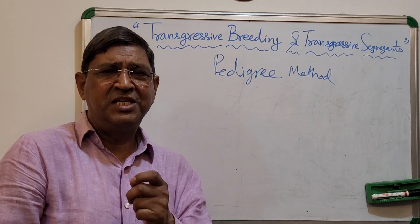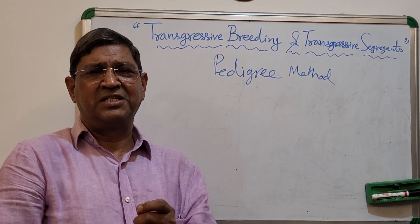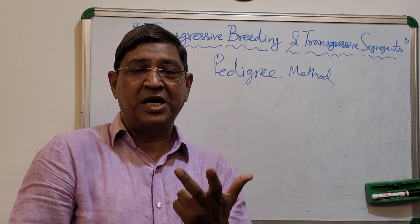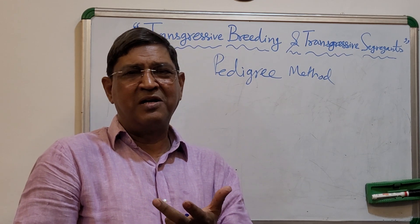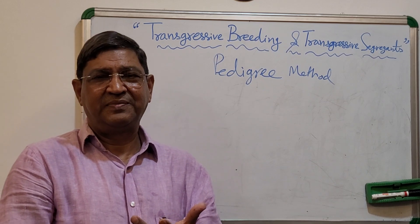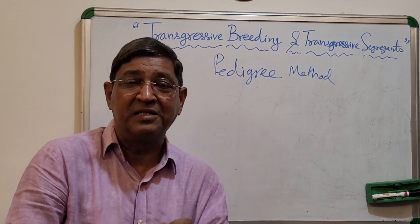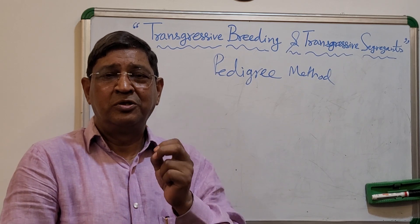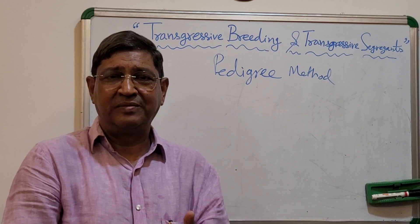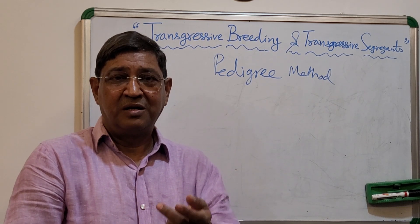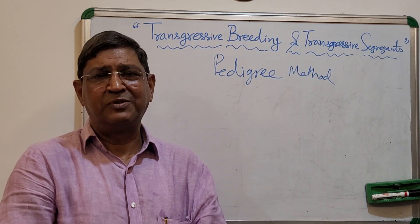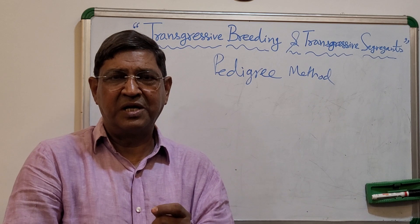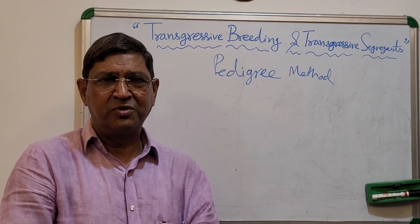We utilize these segregants by selection, and by continuing selection we come to homozygosity at the F7 generation. We come up with a new type of plant, and that plant gives rise to a new variety in self-pollinated crops. Transgressive segregants are the individuals in the segregating generation which are superior to both the parents, which we utilize to develop a new variety in self-pollinated crops.